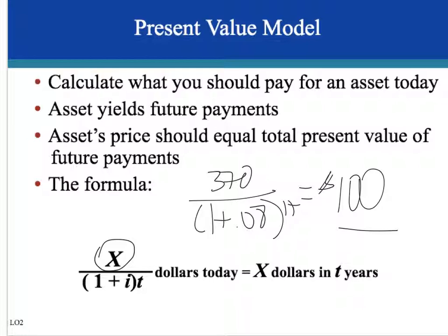We also know that whoever is selling this asset wouldn't accept less than $100, since they know investors can only get the same return if they spend $100 on another asset. So the asset price should equal the total present value of all the future payments — the sum of the present values of all those future payments should equal $100.